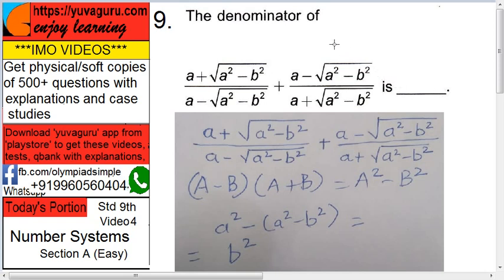Now you only want the denominator, you don't want anything else, so only look at the denominator. What is this? This is like capital A and this is capital B, so it is A minus B into A plus B. So what is this? A² - B².